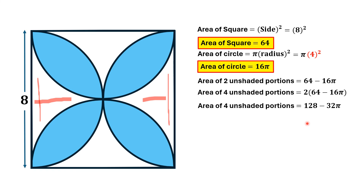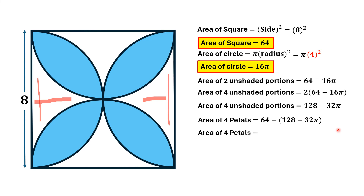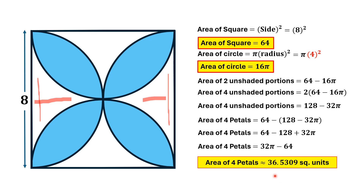To find the area of the four blue petals, we subtract the area of the four unshaded regions from the area of the square: 64 minus (128 minus 32π). Simplifying gives 64 minus 128 plus 32π, which equals 32π minus 64, approximately equal to 36.53 square units. This is the required answer.